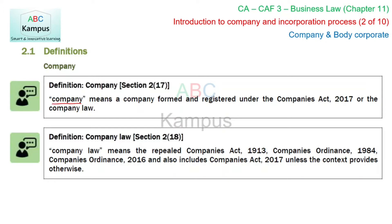A company means a company formed and registered under the Companies Act 2017. یعنی اگر آپ اپنے بزنس کا نام XYZ and Company رکھ دیتے ہیں تو وہ Company نہیں بن جائے گا۔ اس کے لئے ضروری ہے کہ وہ form کیا جائے اور register کیا جائے under Companies Act 2017 اور the company law.